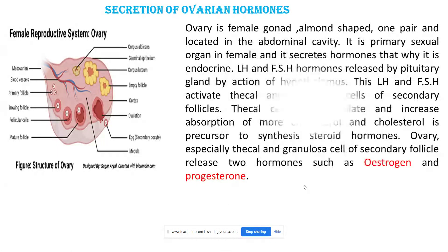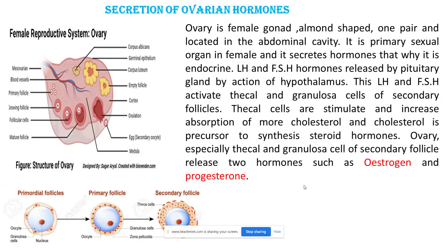This topic is the secretion of ovarian hormones in the female reproductive system. The ovary is a female gonad and a female reproductive organ. It is almond-shaped, present as one pair, and located in the abdominal cavity. It is the primary sexual organ in females, and because it secretes hormones, it is also an endocrine organ.